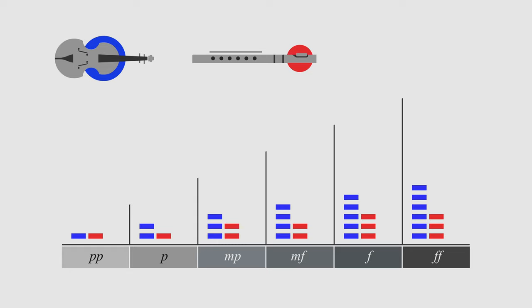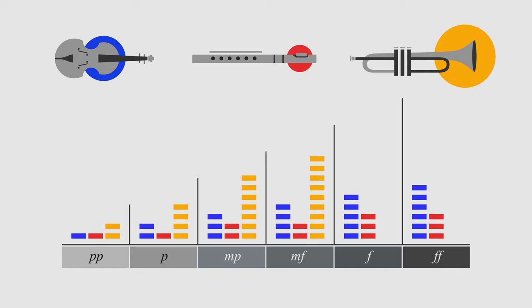Now comes another challenge: the brass. This section is even louder than the other two. Two or three trumpets could easily obliterate everyone else in the orchestra.